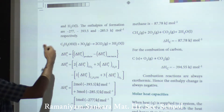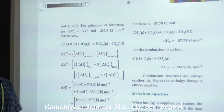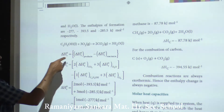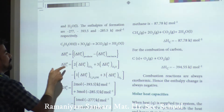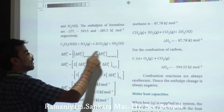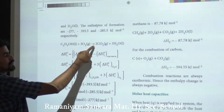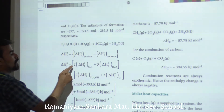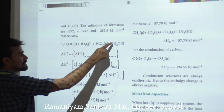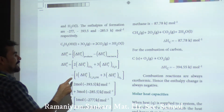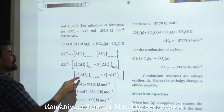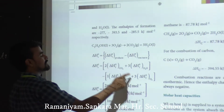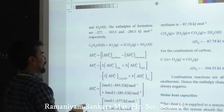The formula is: delta H°r = delta H°f (product side) minus delta H°f (reactant side). For the product side: 2 moles × delta H°f(CO₂) + 3 moles × delta H°f(H₂O). For the reactant side: 1 mole × delta H°f(C₂H₅OH) + 3 × O₂ (which is zero).